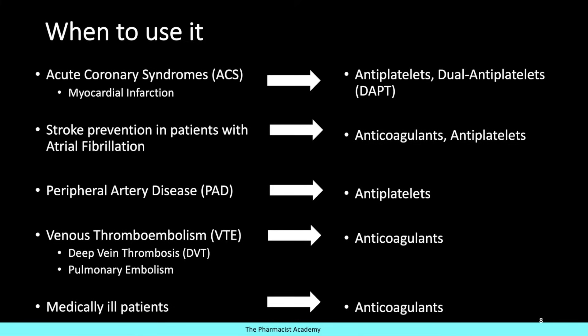For stroke prevention in patients with atrial fibrillation — patients who have AFib are at a high risk of developing a stroke — using anticoagulants can reduce their risk from about 5% to about 1%. A scoring system is used to determine if the patient requires antithrombotics. Based on the patient's CHA2DS2-VASc score, you would determine if the patient should be on anticoagulants to prevent stroke. Previously, antiplatelets were also an option. In 2018, the CHEST guidelines for anticoagulation in atrial fibrillation no longer recommended antiplatelet therapy, recommending anticoagulation instead — though other organizations still recommend antiplatelets for patients who cannot tolerate anticoagulants.